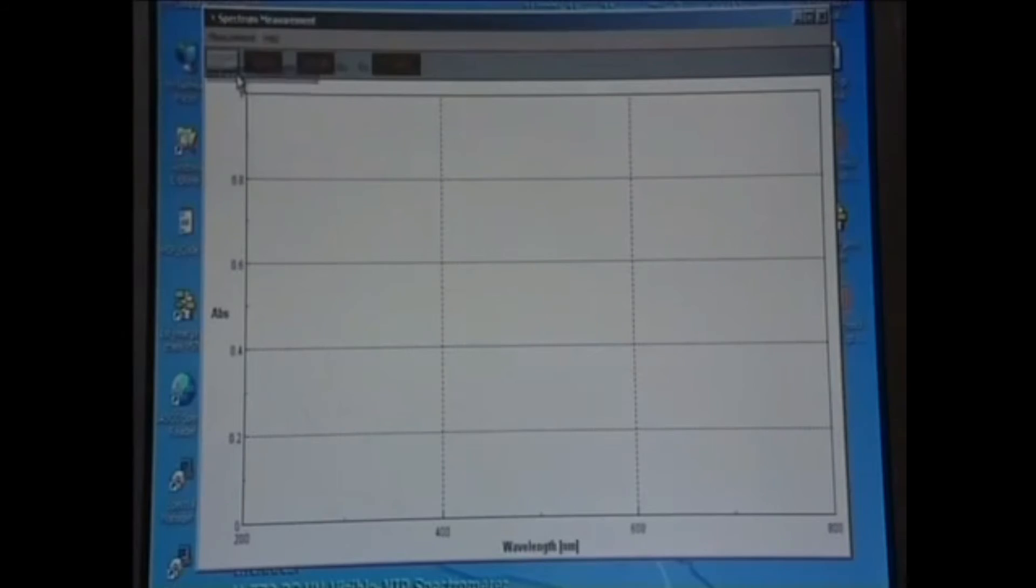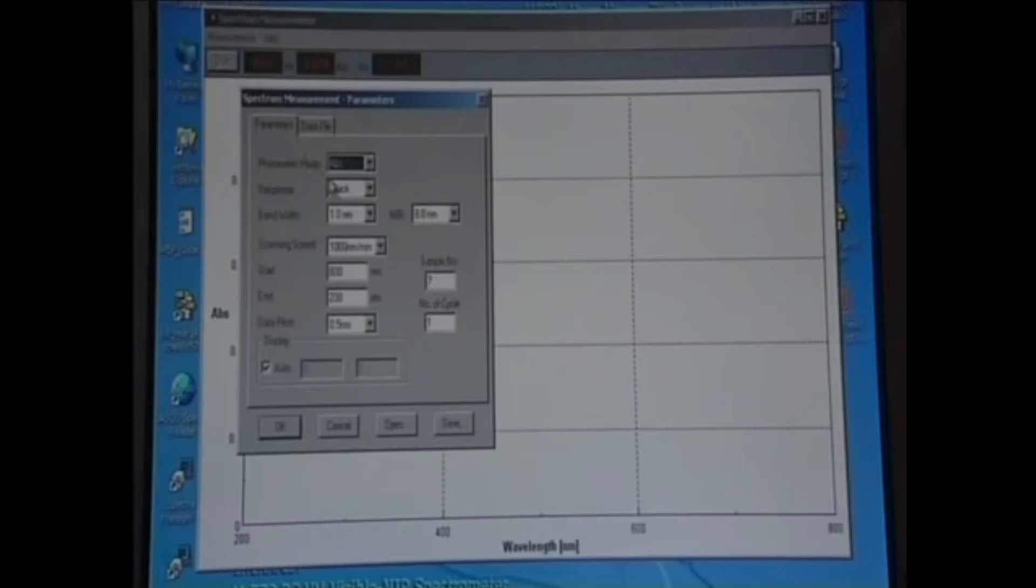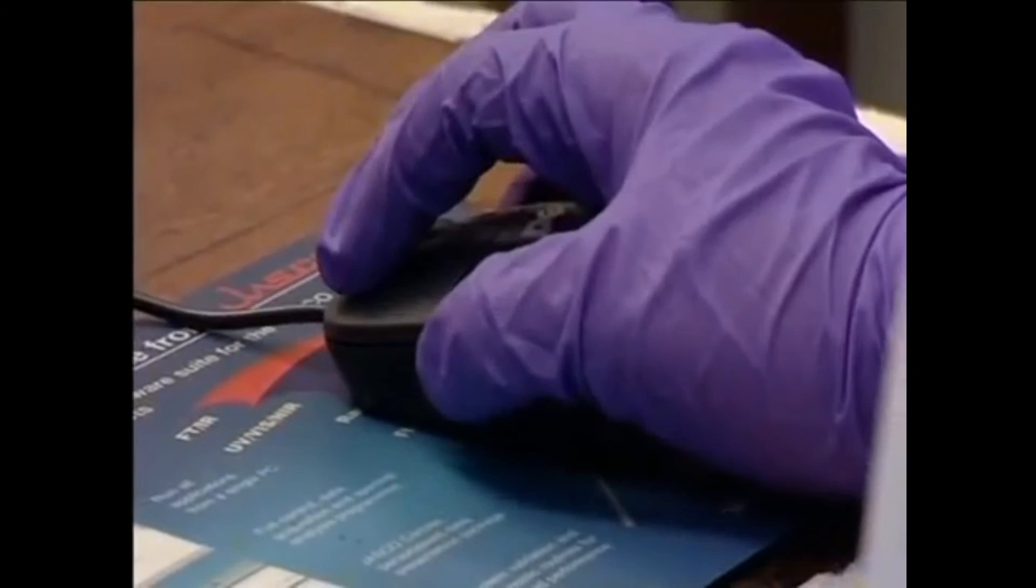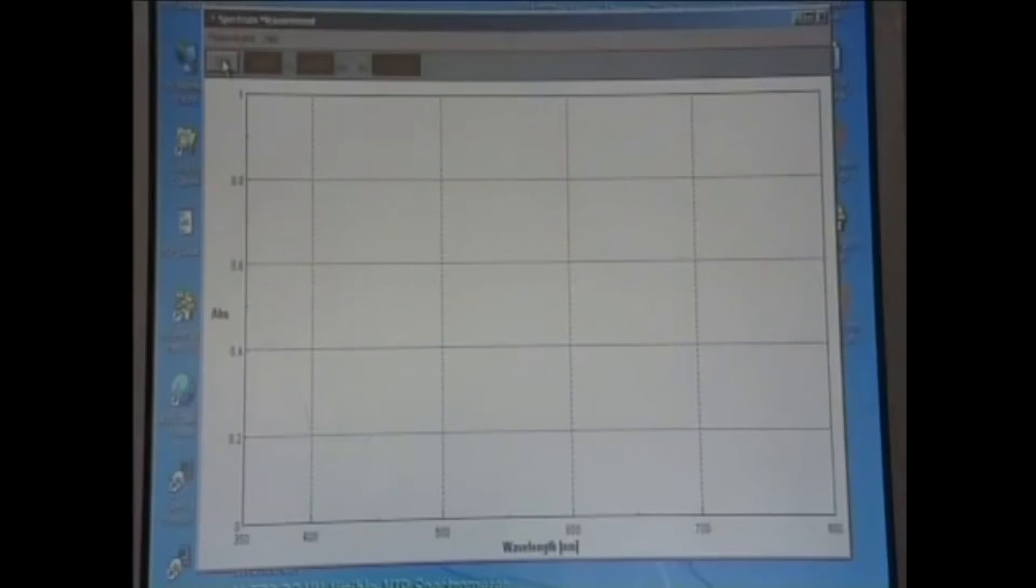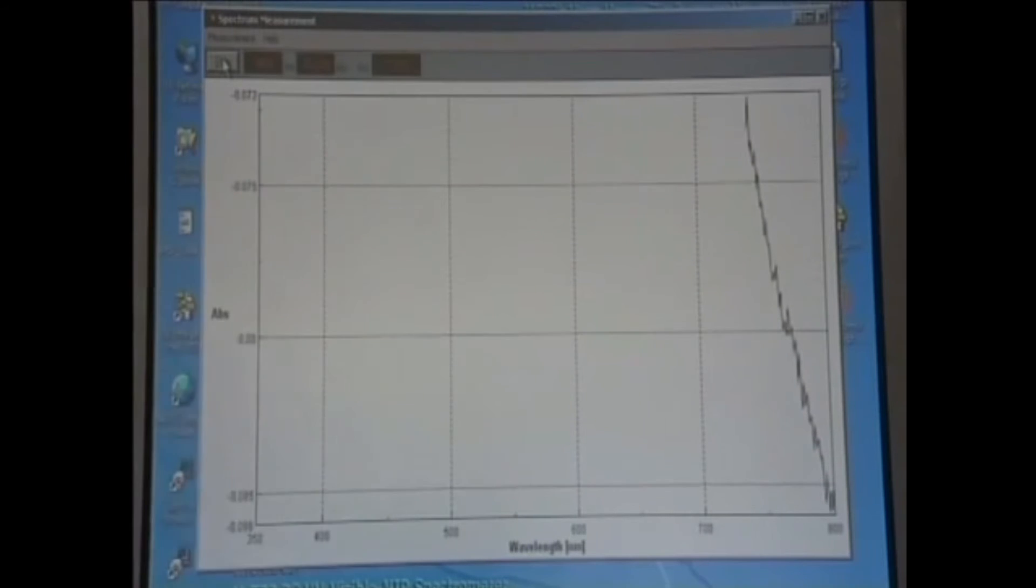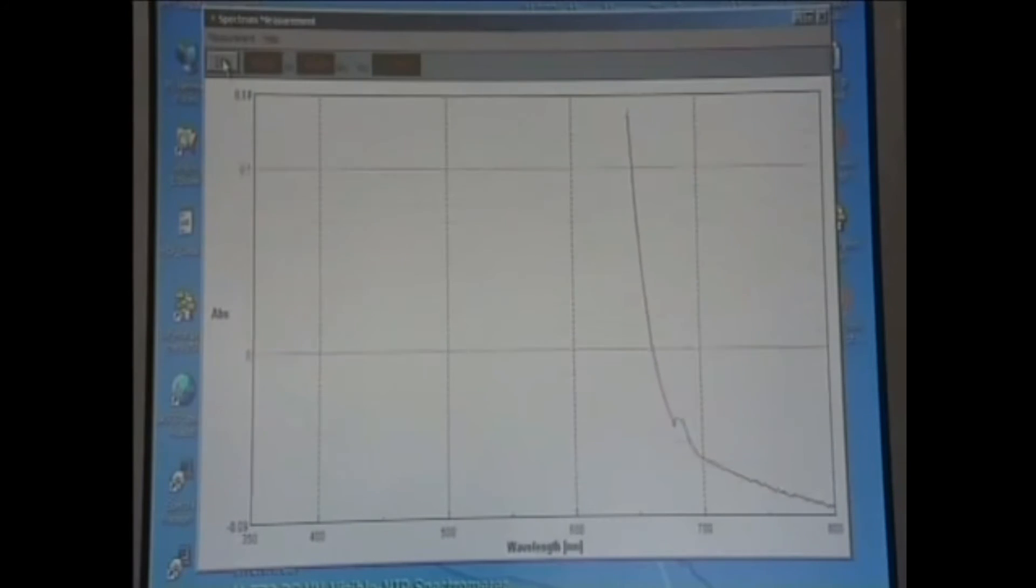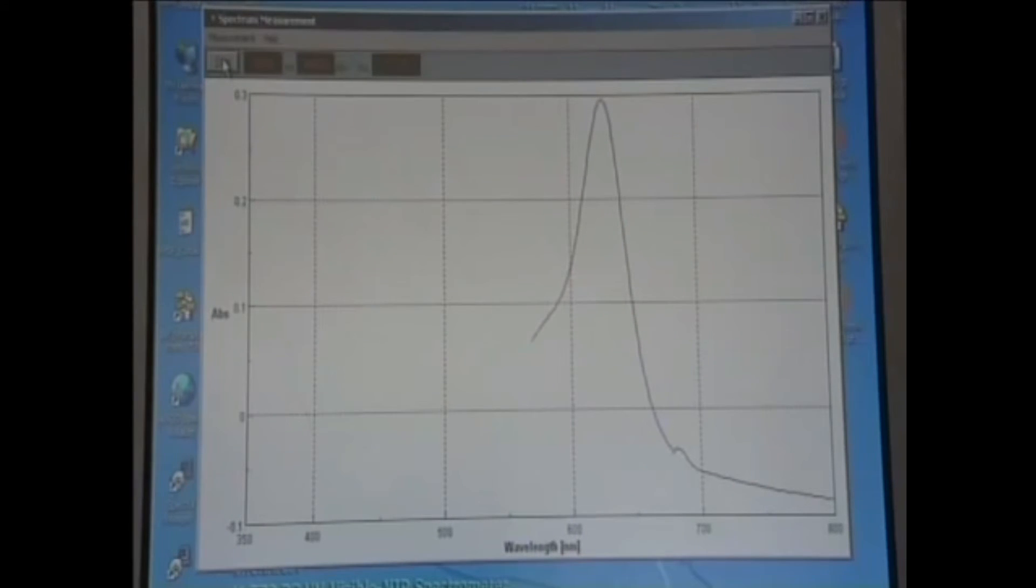The operator types details such as the wavelength range required and scanning speed into the computer that controls the instrument. He also zeros the instrument at a point where the sample does not absorb and then starts the scan. The spectrum appears on screen. The data is saved on the computer and a hard copy can be printed.